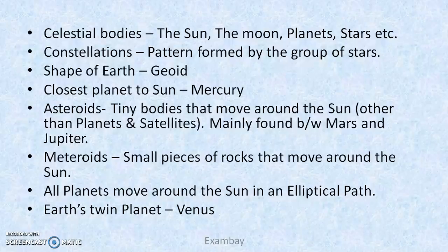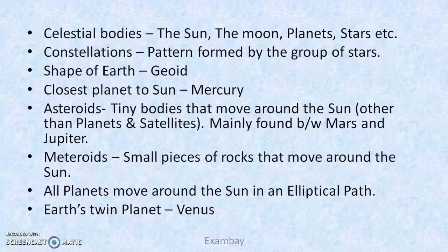Asteroids are smaller than planets, but sometimes they can be bigger. They are mainly found between Mars and Jupiter — if we look at that region we see rings, those are asteroids. The largest asteroid is Ceres. Then there are meteoroids — rocks and pieces that move around the sun. If they enter the Earth's atmosphere, they become meteors, which we see at night as shooting stars. If they reach Earth's surface, they are meteorites.